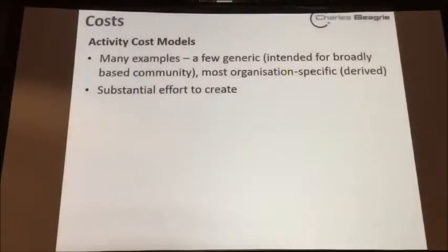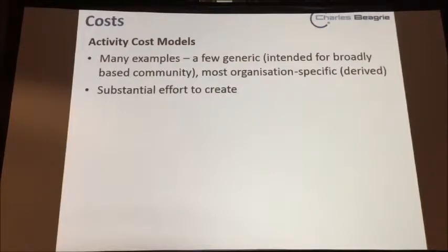Starting with costs, I'm going to break these down into three major areas. First, we have activity cost models. There are many examples of these — I've seen whole sheets of A4 filled up with cost models. But only a couple are truly generic, intended for broadly based communities. Most, when you look at them, are organization-specific and often derived from those generic models. Even when somebody says it's unique to their institution, they've tended to look at those generic models and a substantial amount will be derived from them.